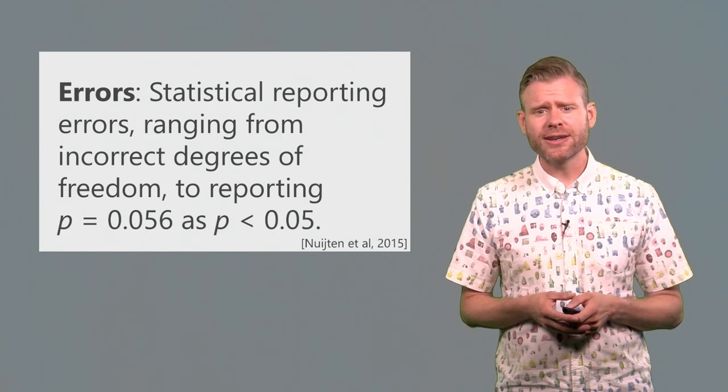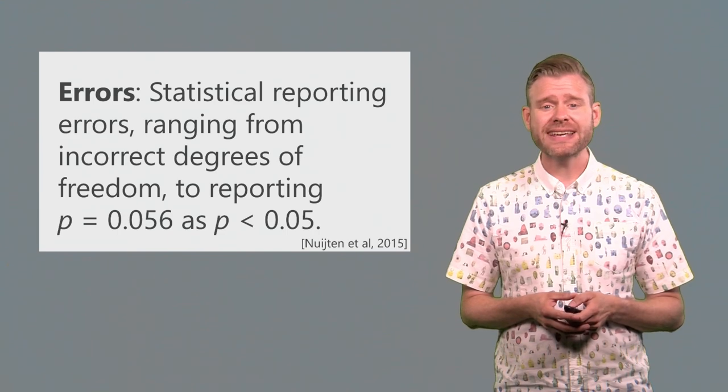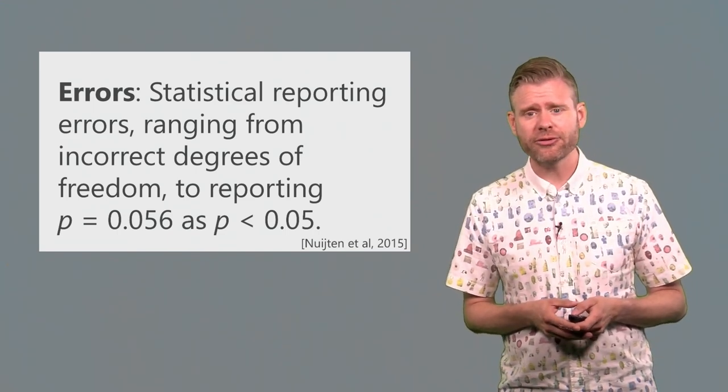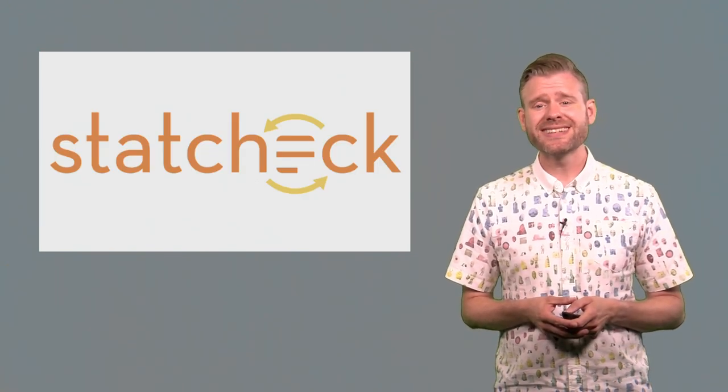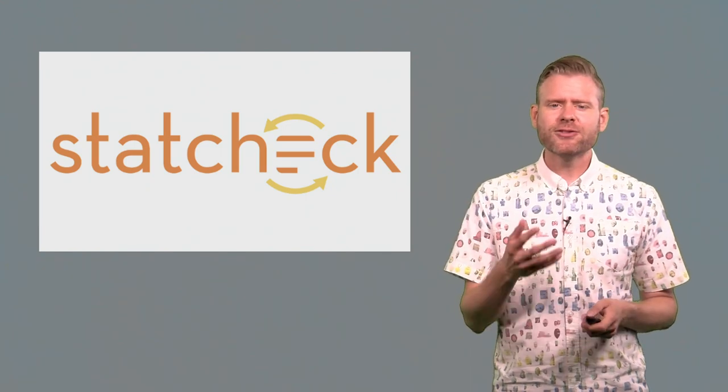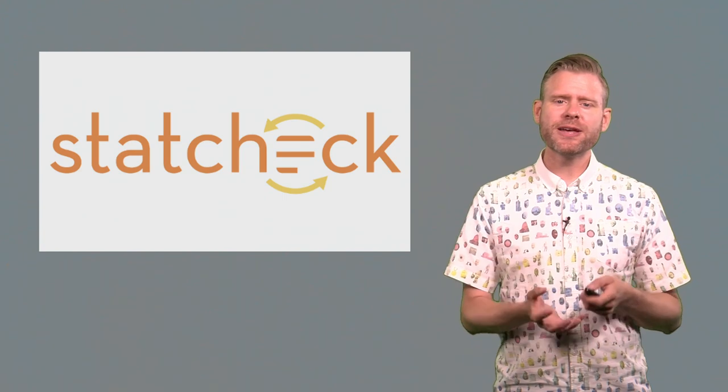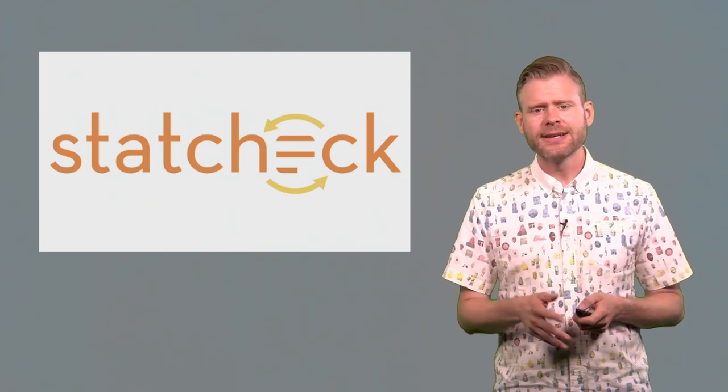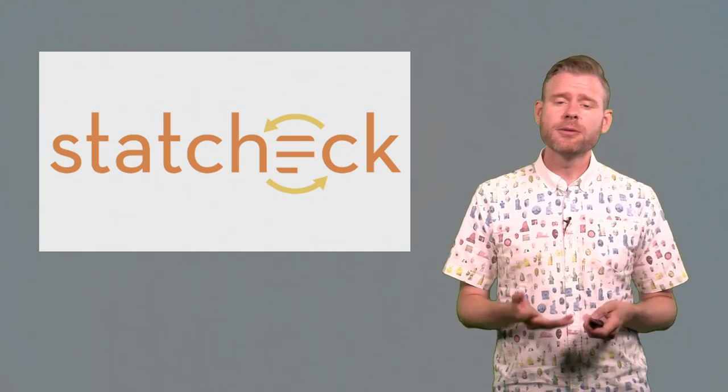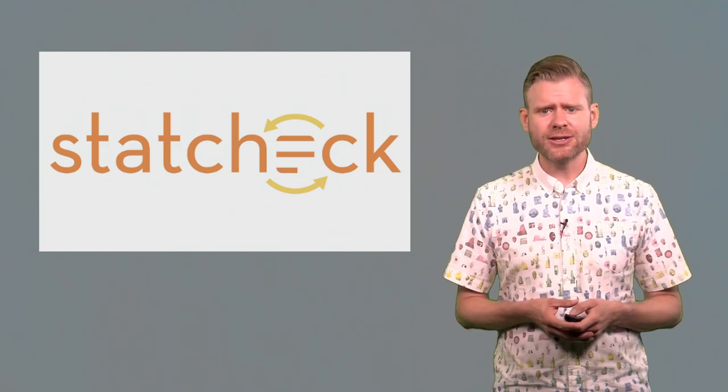Based on work by Michèle Nuijten and colleagues, we know that some people actually report a p-value of 0.056 as a p-value that's smaller than 0.05. They also developed a statistical tool that you can use to upload a manuscript you're working on, and to use this tool as a statistics check similar to a spell check that you might want to perform on your paper. This only works if you report statistics in APA style, but if you do, it's a very nice way to prevent errors from being introduced in your own paper.